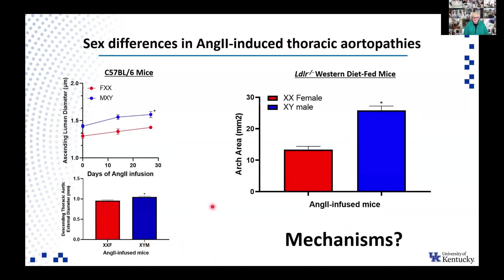In age-matched male and female C57 black 6 mice on standard diet infused with angiotensin II, males have larger lumen diameters and larger external diameters of the descending thoracic aorta at study endpoint. In a genetically manipulated LDL receptor knockout mouse fed a Western diet, this pathology persists, with aortic arch area higher in males compared to females. We then set about to understand the mechanisms of these sex differences, focusing on male androgen based on previous work in our laboratory around abdominal aortic aneurysms.